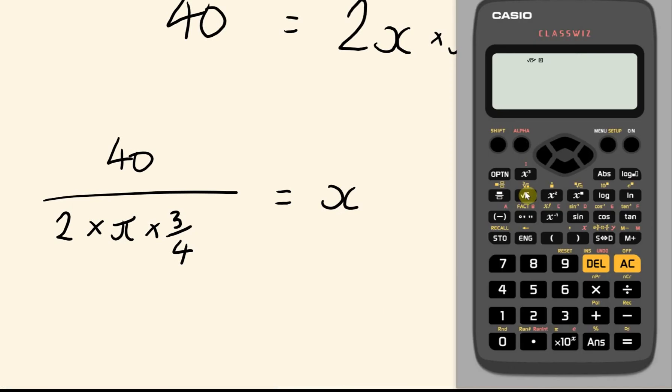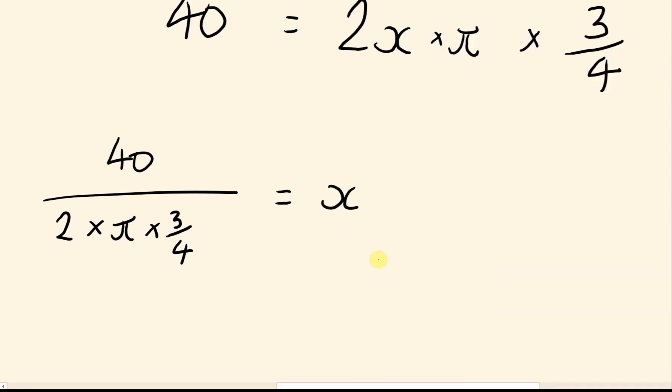From there, you can just go to your calculator and then just type all that in. So 40 over 2 times pi times 3 quarters, which gives me the radius of 8.49 to three significant figures.